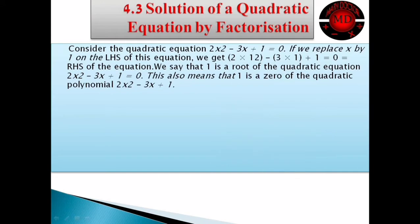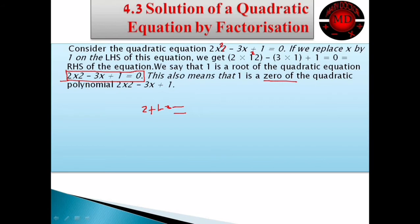When we replace x with 1, we get 2 into 1 raised to power 2, which is 1 squared. So 2 into 1 minus 3 into 1 plus 1, which gives 2 minus 3 plus 1, which is equal to 0.